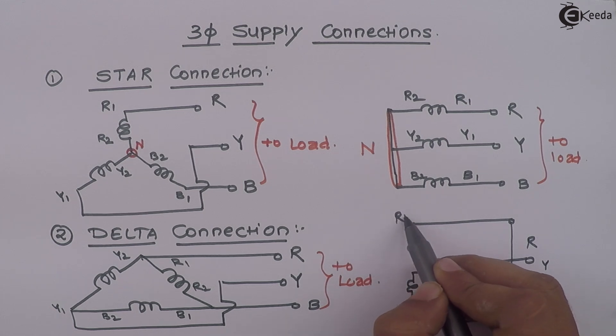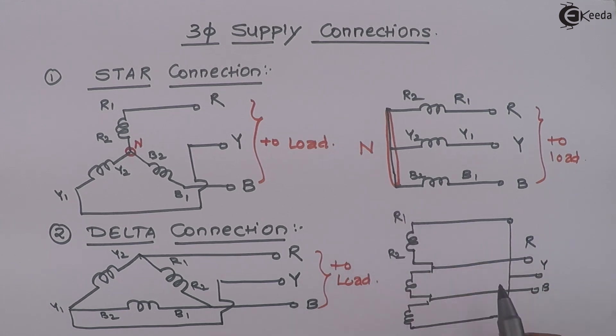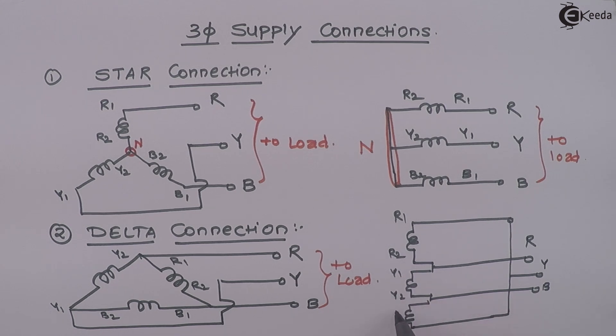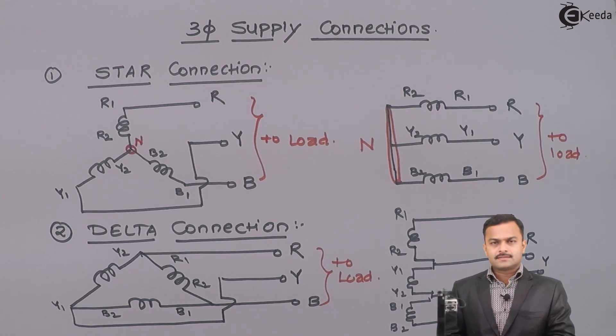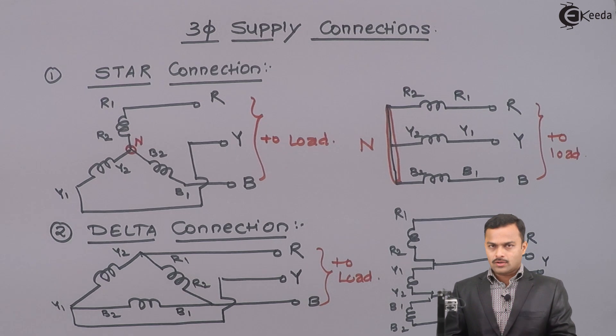This will be R1, R2, Y1, Y2 and B1, B2. It is also similar to this but just drawn in different orientations.